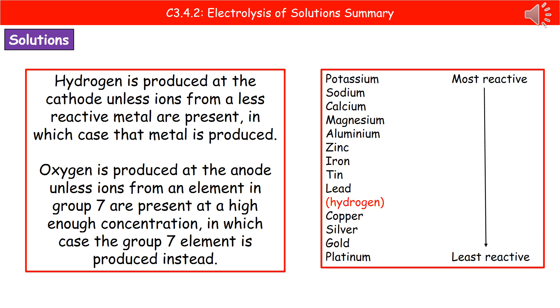For the anode, the rule is simple: oxygen is produced unless a group seven element is present. Group seven are the halogens: fluorine, chlorine, bromine, iodine, and astatine. If any of those ions are present in our solution, that's what forms at the anode. If none are present, oxygen is produced.